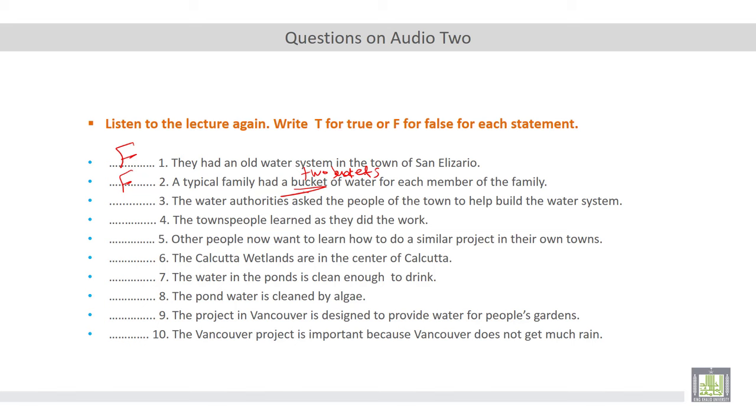Number three. The water authorities asked the people of the town to help build the water system. What do you think? This statement is false because the people of the town asked the authorities to build the water system but the authorities never did. That's why this statement is false. Thank you very much and wish you all the best.